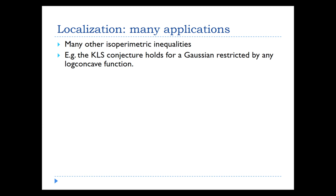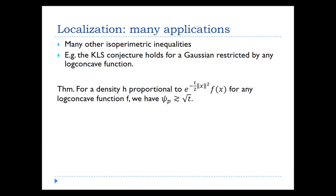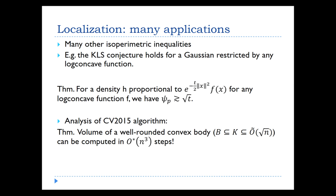Now, this technique as described already has many applications — many other isoperimetric inequalities, surprising ones. The fact I mentioned in the first lecture that the KLS conjecture holds for Gaussians modified by log-concave functions — you can do that by just this technique, because as you keep cutting, the limit will still perhaps carry the Gaussian with you. This is the statement that if you have a density that's any log-concave function times the Gaussian with weight t, then the Cheeger constant is at least square root t. The analysis of the volume algorithm, anti-concentration of polynomials over log-concave densities, can all be shown using localization. However, the technique does not work for us to improve the KLS bound.